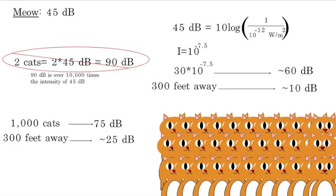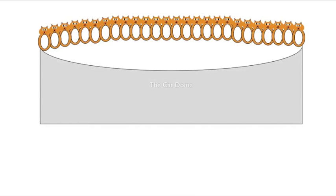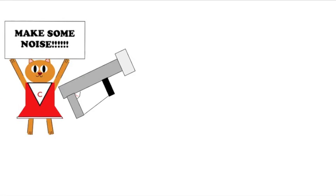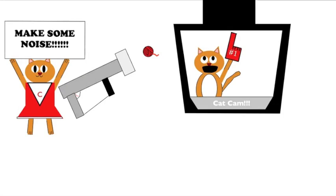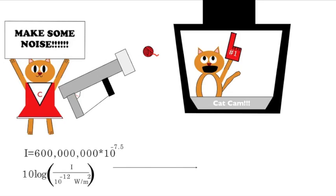So instead what we have to do is we have to gather up all these cats for this giant cat convention, and then get them hyped up, maybe get one of those t-shirt guns that shoots balls of yarn, and then get the Jumbotron going, and get all the cats going crazy. Well then we can take 600 million, multiply it by the intensity of one cat meowing.